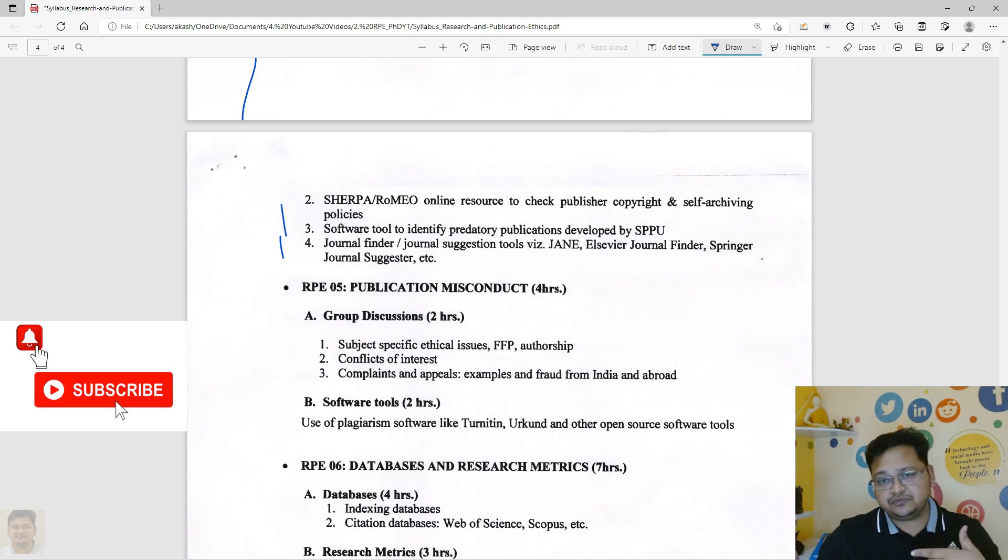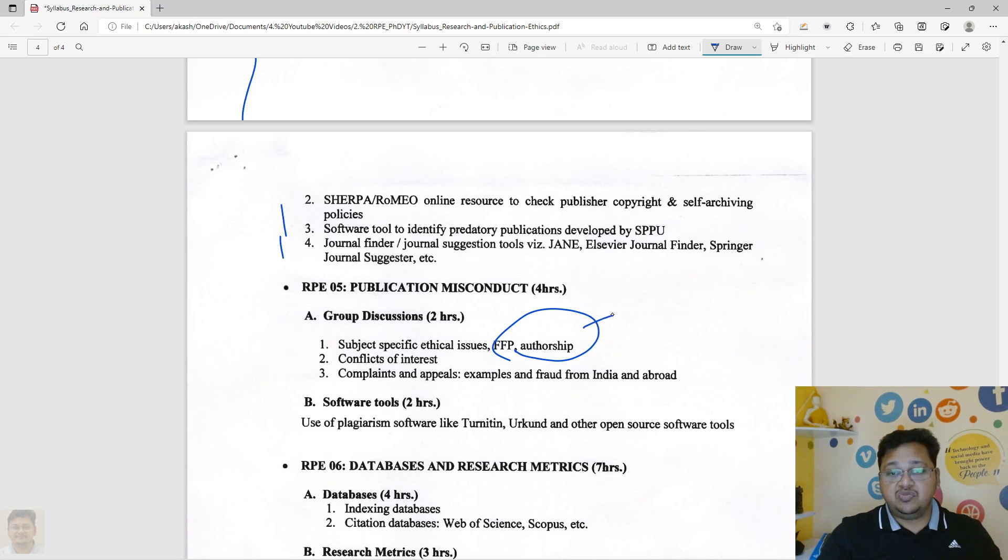And more about the publication misconduct also, which we will be covering with the falsification. Moreover, we will discuss about the authorship, right now what is the first author, the co-author, the corresponding author, or the last, or the significance of it.